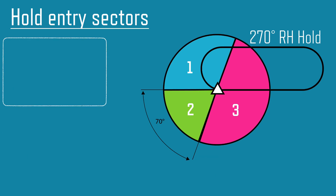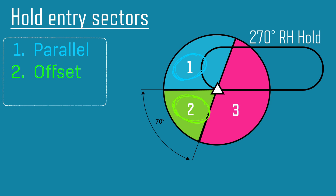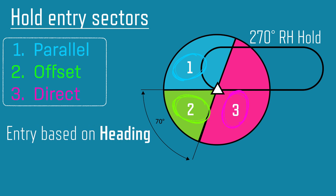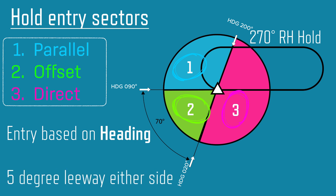There are three hold entry sectors: one is parallel, two is offset, three is direct. The entry you fly is based on your heading as you arrive at the fix, not directly on position or track. Lastly, you have five degrees of leeway between sectors, so you can in some situations decide which to fly.